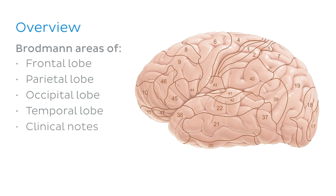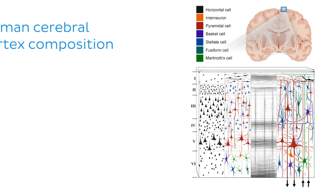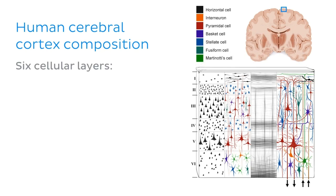Before we really dive into it, it's worth mentioning that Brodmann's classification system is based on the fact that the human cerebral cortex is composed of six cellular layers.